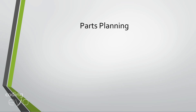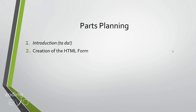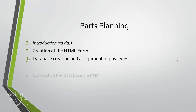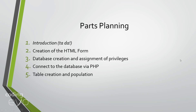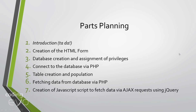We're going to be breaking this up into parts. The first part is the introduction, which you're watching right now. The second part will cover the creation of the HTML form, and we'll get it ready so that we can add JavaScript later on very easily. Then we'll create the database and assign privileges to it, create PHP code to connect to the database, create tables inside the database and populate them with data, fetch the data from the database via PHP, and finally create a JavaScript script to fetch data via Ajax request using jQuery and then assign it to the drop downs in our HTML form.